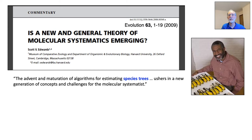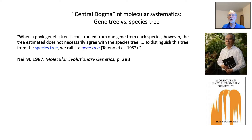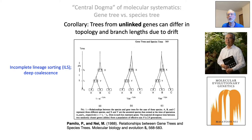In an important paper in 2009, Scott Edwards announced the advent of the species tree paradigm in molecular systematics. Its central dogma was the insight from population genetics going back to the 1980s that gene trees are not species trees. The corollary to this dogma is that gene trees will disagree with one another due to drift.